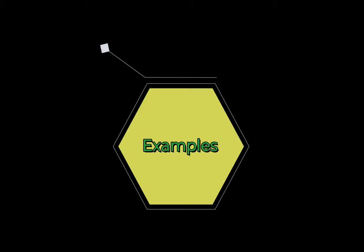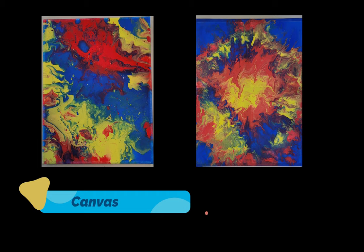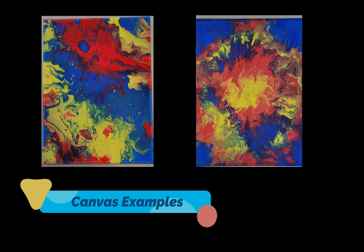Here are some examples of completed projects. See how different the tray and paper process turned out compared to the canvas process? Please remember that your masterpiece will not and should not look exactly like these examples. There is no wrong way to make art. Each piece is as unique as the individual that created it.